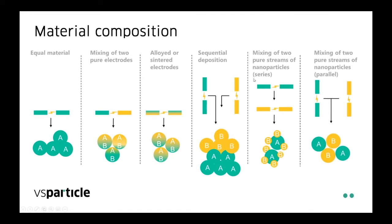We can also combine different systems to make more complex layers or morphologies. Sequential deposition uses the first generator to synthesize material A and then deposit material B to generate stacked layers. Another approach mixes two gas streams — the first generator produces material A and these particles are fed through the second generator where material B is deposited on material A. Depending on the material interactions, this can lead to either core-shell structures or island formation. We can also mix the gas streams to make mixed layers consisting of different materials.